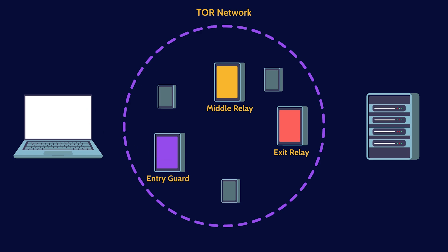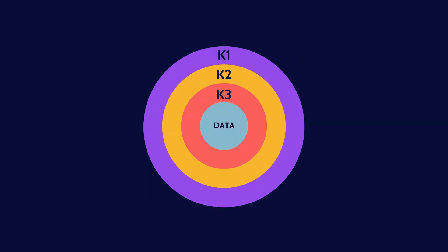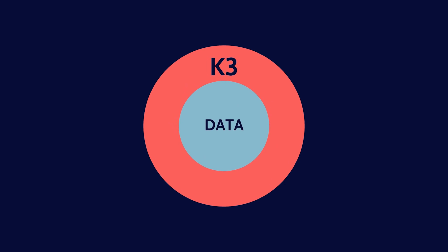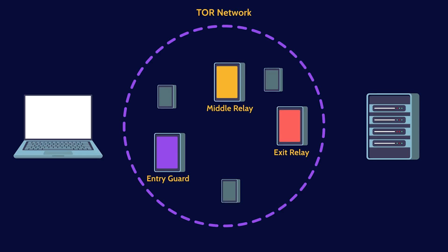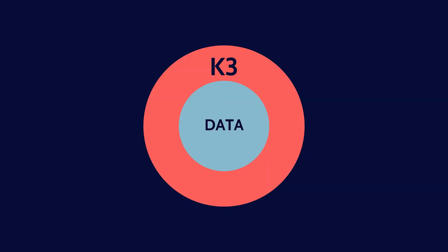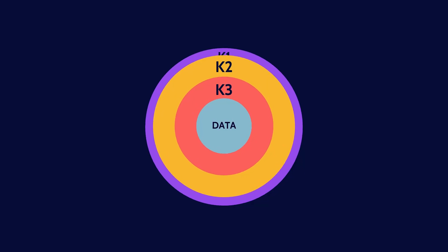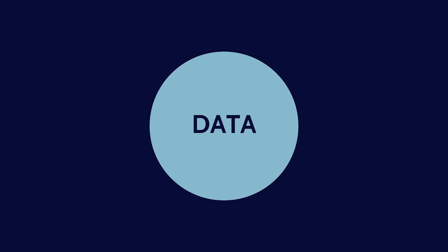The first layer, or entry guard, knows your IP address, but it doesn't know your final destination. This relay peels away the first layer of encryption and then passes the message to the middle relay. The middle relay knows only that it needs to pass the data to the next layer — the exit relay — and peels away another layer of encryption, but it doesn't know the original source or the final destination. The exit relay is the final layer that decrypts the last layer of encryption and sends your request to the intended destination. The exit relay knows the final destination, but not the original source, keeping your identity fully hidden. Imagine an onion with its multiple layers: your original data at the core, wrapped in several layers of encryption. As the data travels through each relay, a layer of encryption is peeled away, but the relays never see the entire picture.